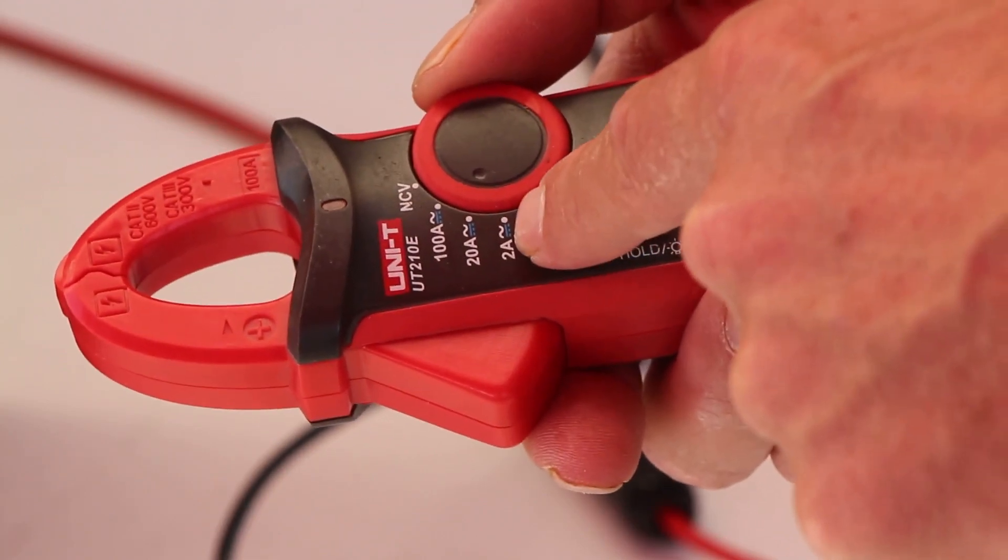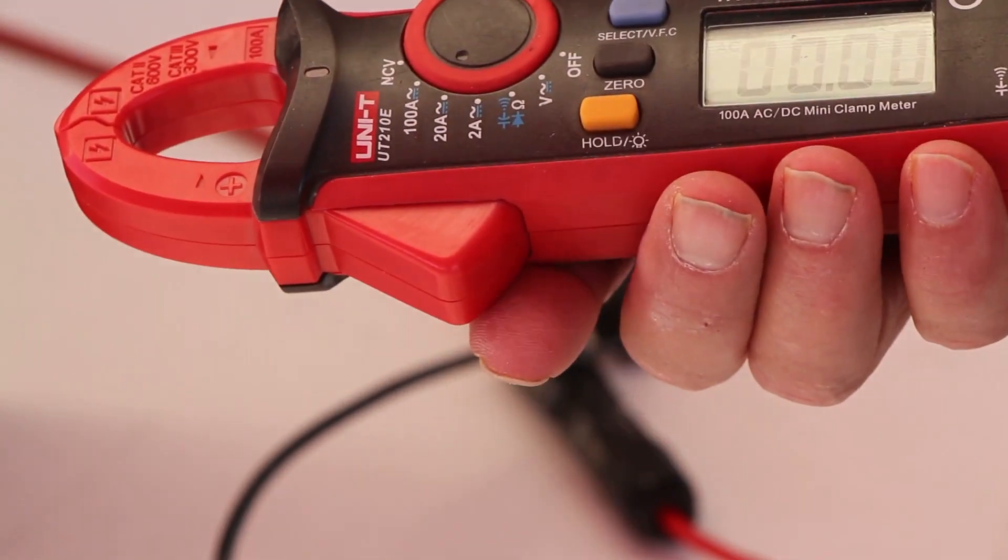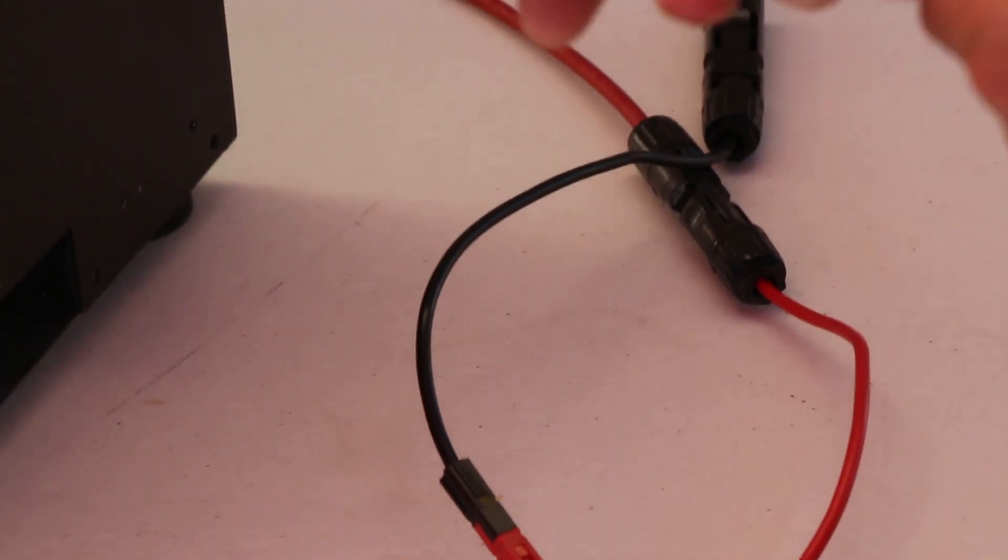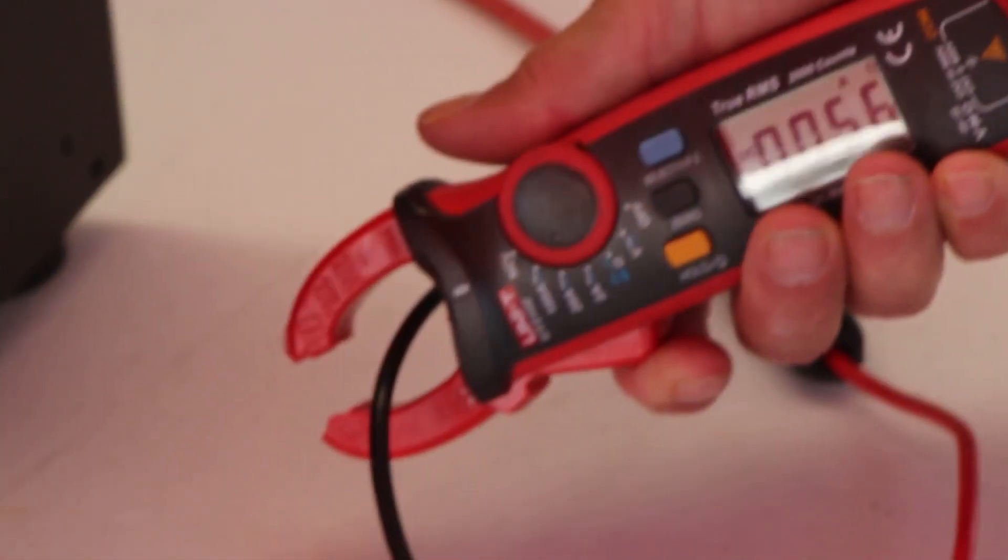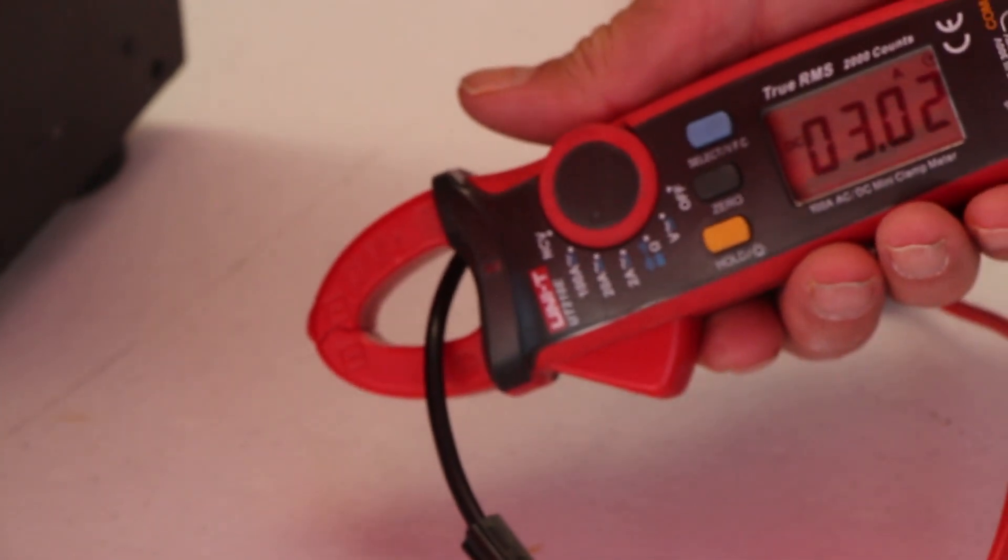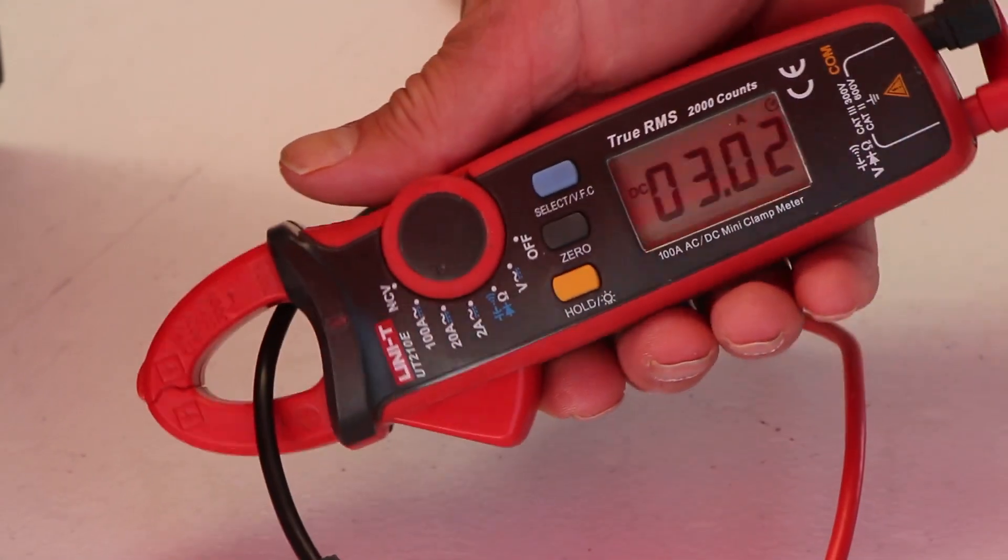We want to be over that 5 amps, so 2 amps would be too low. So we turn it to 20 amps and then we push the select because we got to go to DC again, and then you simply clamp this over that line. Okay, so we are putting out 3 amps.